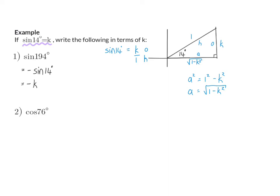Number two, cos of 76. Because we only have information about a 14 degree triangle, we need to rewrite this in terms of 14. We need to realize that 76 and 14 add up to 90, which means we can use co-functions. I am going to rewrite this as sin of 14, because 14 and 76 add up to 90. That means this ratio is also k.